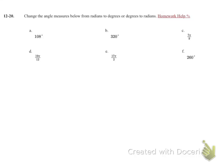Problem 12-20. We're going to be switching between degrees and radians from the given information. So the first one, we're looking at 108 degrees, and we want to switch that one to radians.